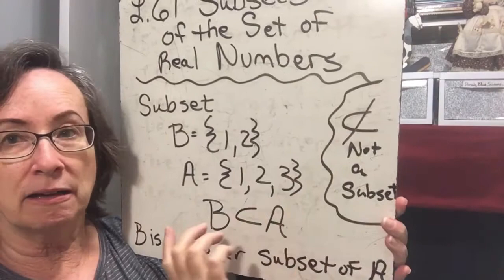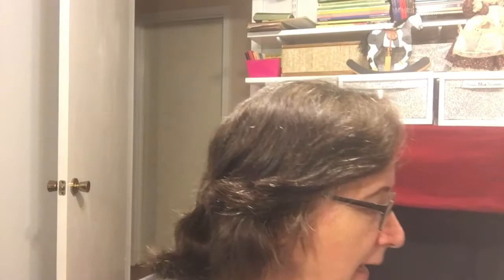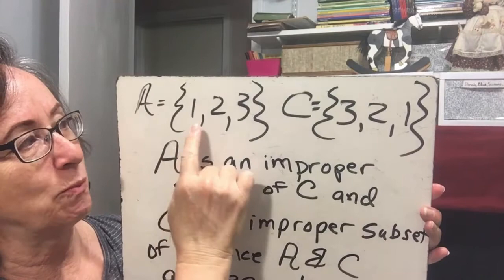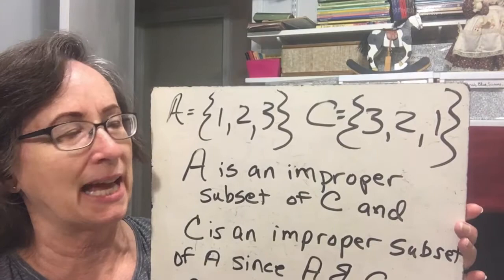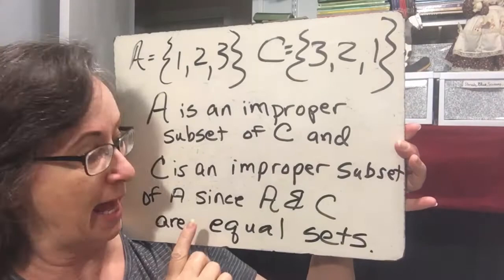If one set is not a subset of another set, we use this 'not' symbol. Now if A is {1, 2, 3} and C is {3, 2, 1}, you can see those are equivalent sets. Because they are equivalent sets, we would say A is an improper subset of C, and C is also an improper subset of A, since A and C are actually equal sets.